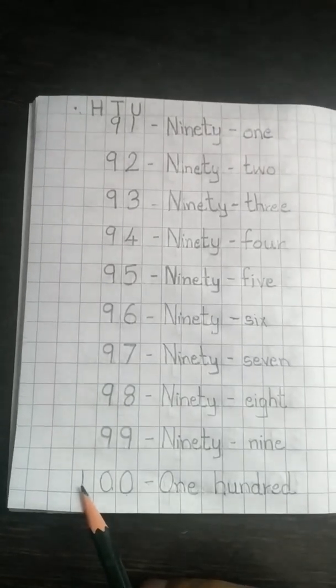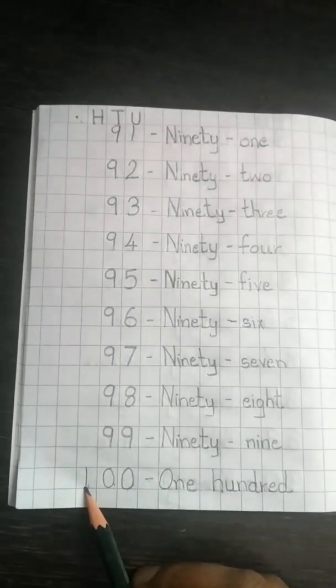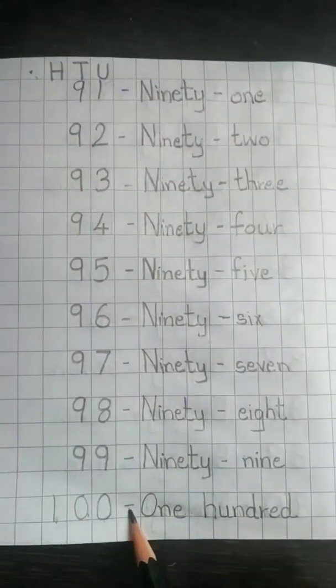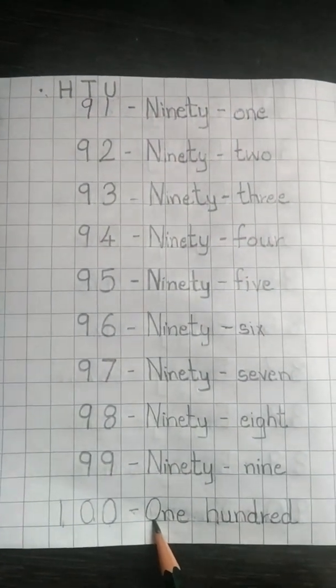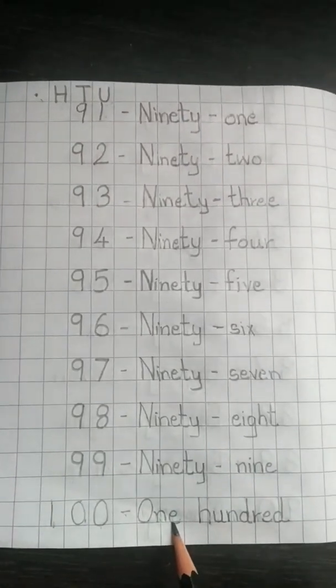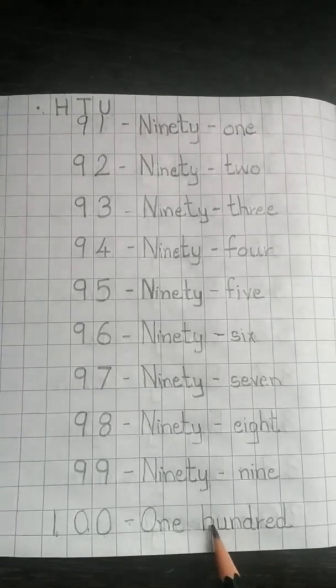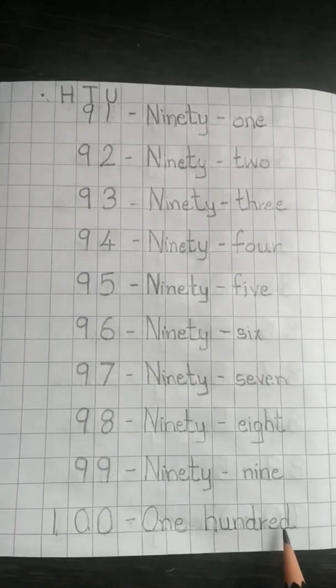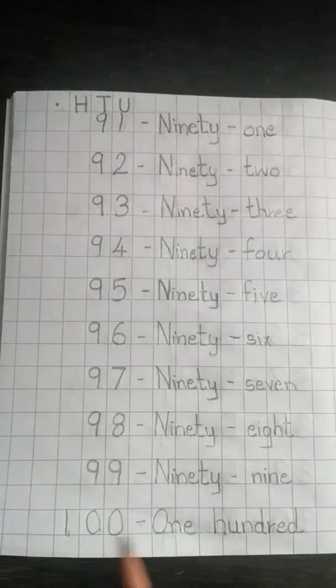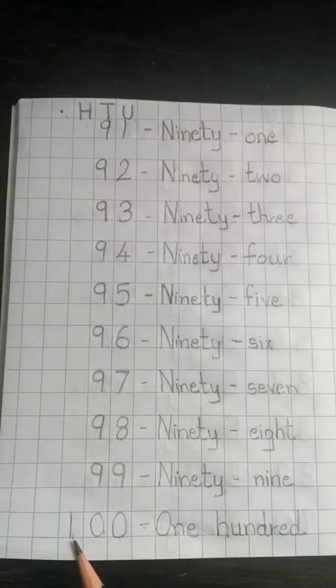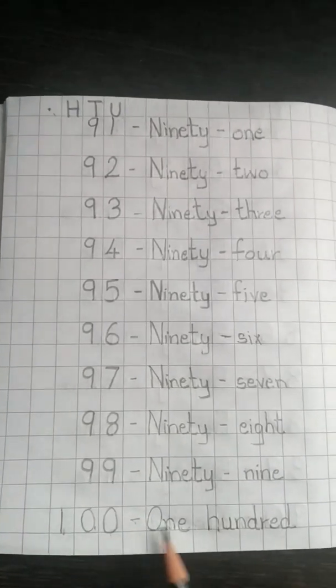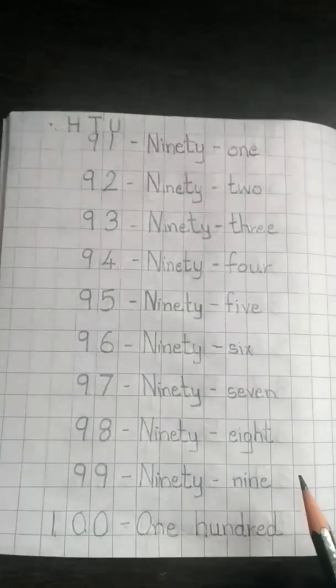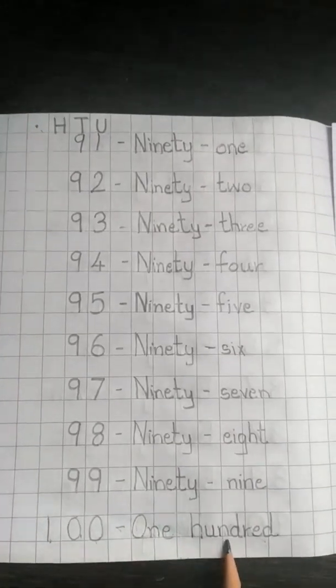Now, so children, now we have already finished writing till 99. Let's see how to write number 100. For writing number 100, 1 in the hundreds place, 0 tens, and 0 units. Then we put a dash and we write 1, capital O, N, E, 1, leave a space, 100, H, U, N, D, R, E, D, 100. So here we write 100. I repeat, we have written 100, dash, 100. In this way we have finished writing number names till 100.